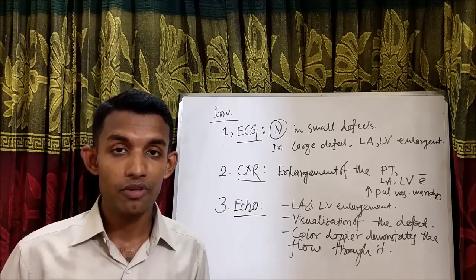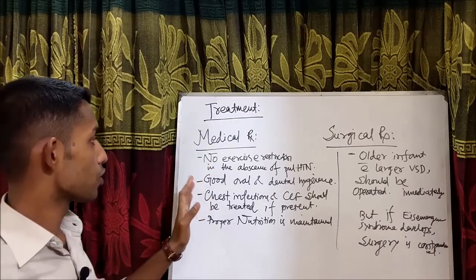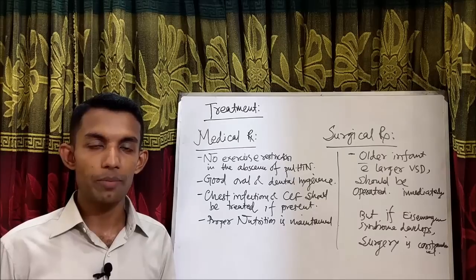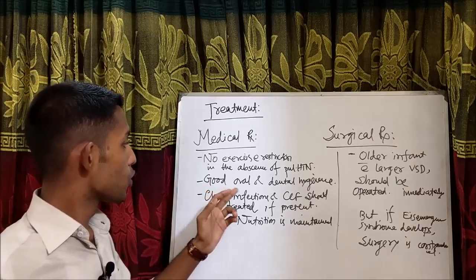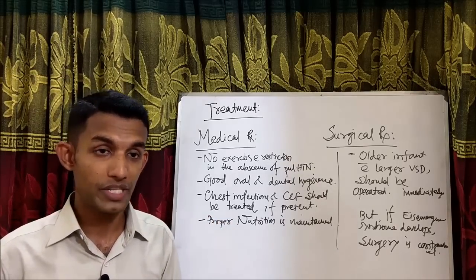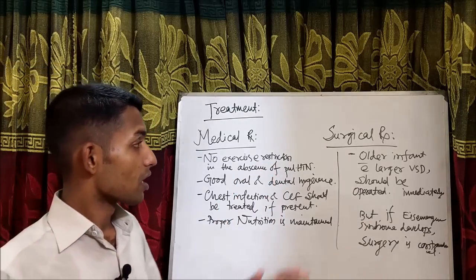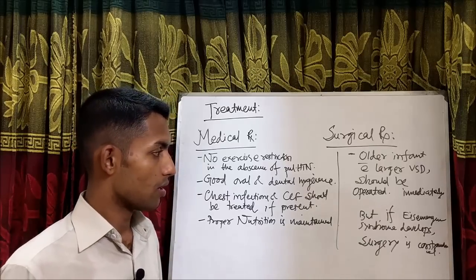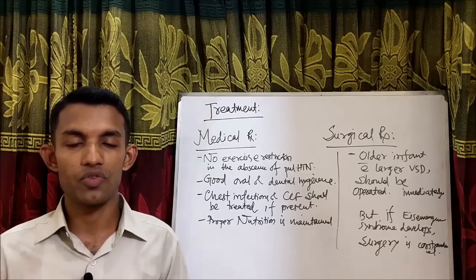For the treatment of VSD, there are medical treatment and surgical treatment. In medical treatment: no exercise restriction in the absence of pulmonary hypertension. If there is no pulmonary hypertension, no need to restrict the exercise of that baby. Maintenance of good oral and dental hygiene, chest infections and congestive cardiac failure should be treated if present, and proper nutrition is maintained. For surgical treatment, older infants with larger VSD should be operated immediately. But once Eisenmenger syndrome develops with significant pulmonary hypertension, surgery is contraindicated.